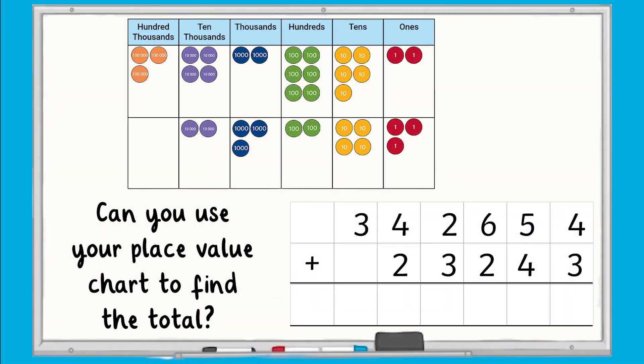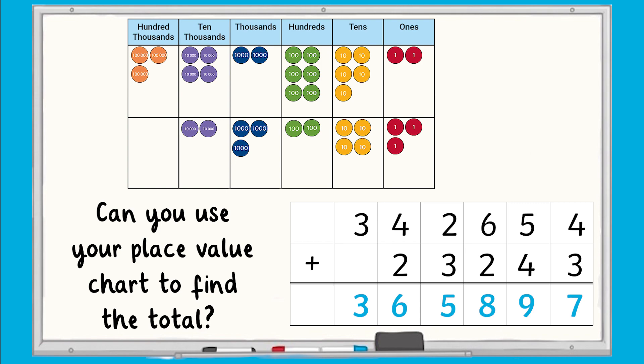Can you use your place value chart to find the total of these numbers? Your answer should be 365,897. Well done if you got it right.